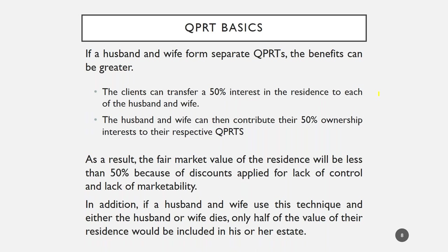This is an effective way to transfer additional wealth. One other nice benefit is that you reduce the mortality risk because it's less likely that both husband and wife will die during the retained terms. As a result, it's more likely that at least one of the two QPRTs will be successful in transferring at least half the property out of the grantor's estate. It's also important to remember that husband and wife don't need to have the same retained terms — one could be six years, one could be 20 years, depending on health and the desired risk exposure.